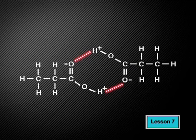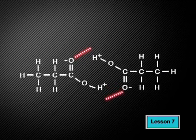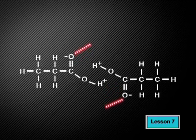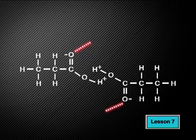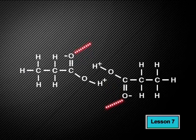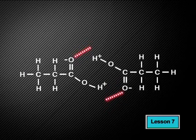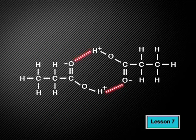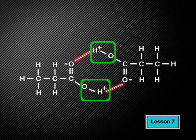In propanoic acid, hydrogen bonds form between the negative oxygen pole and the positive hydrogen pole of different molecules. More energy is required to break these strong hydrogen bonds, and so the boiling and melting points of molecules like propanoic acid that have a hydroxyl group are higher than other isomers that don't have hydroxyl groups.